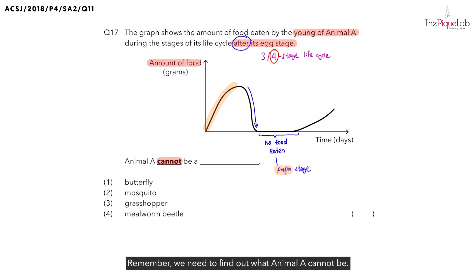Remember, we need to find out what animal A cannot be. That means, shall we choose the animals with a four or a three-stage life cycle? We shall choose the animals that have a three-stage life cycle. So let's check.